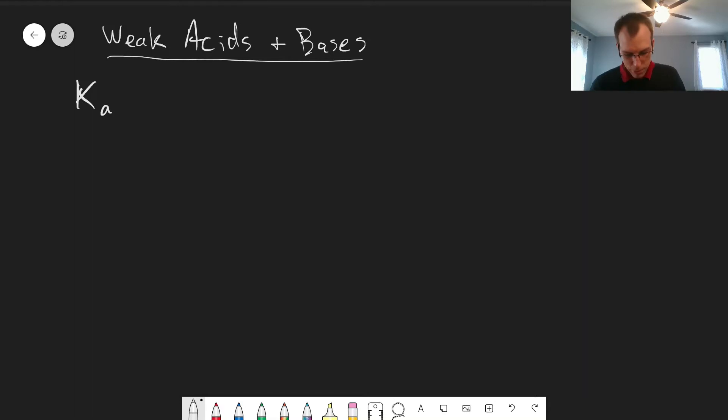So first are the equilibrium constants that we use for weak acids and bases, Ka and Kb, which I just want to make sure we're all on the same page of which reactions these refer to.